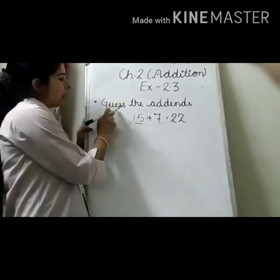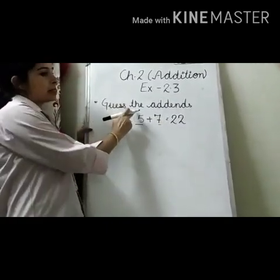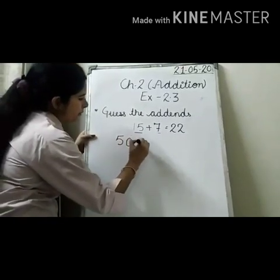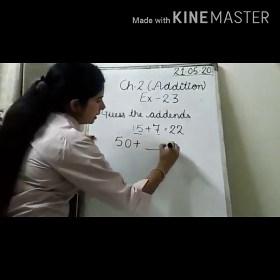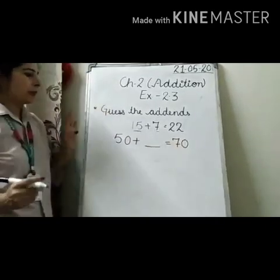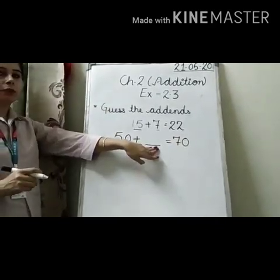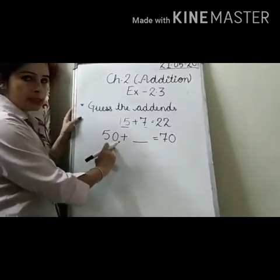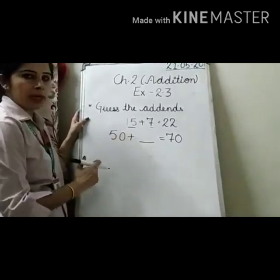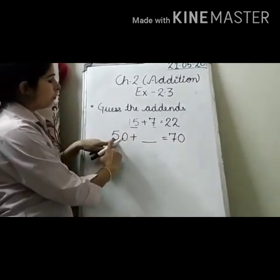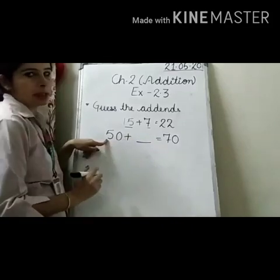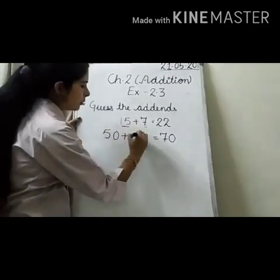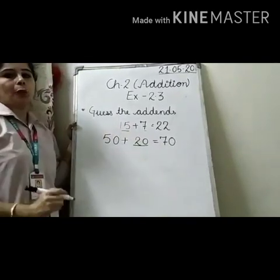Our topic is 'Guess the Addends.' Suppose there is a question: 50 plus dash equals 70 — we need to find the missing addend. Since 50 and 70 are both tens, the answer will also be in tens. What must be added to 5 to make 7? 5 plus 2 equals 7, so the missing addend is 20.